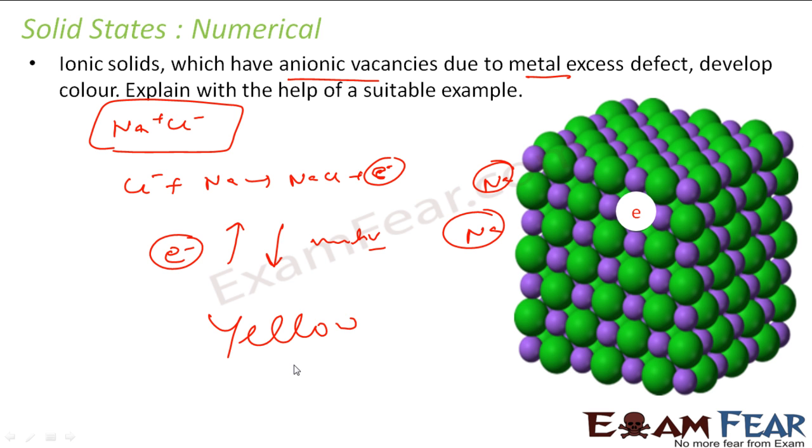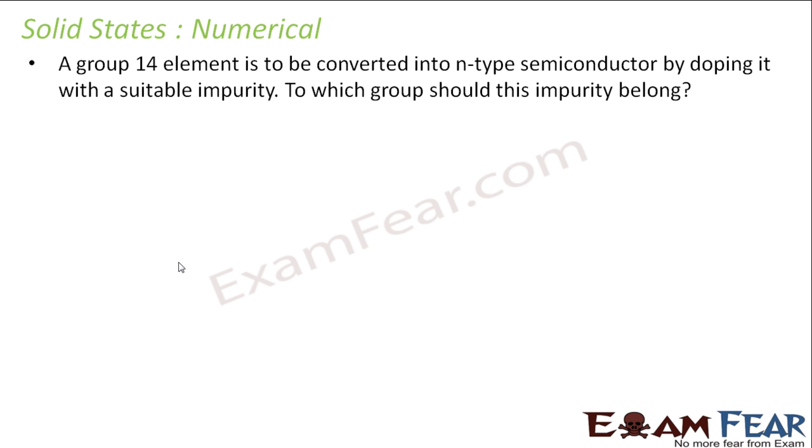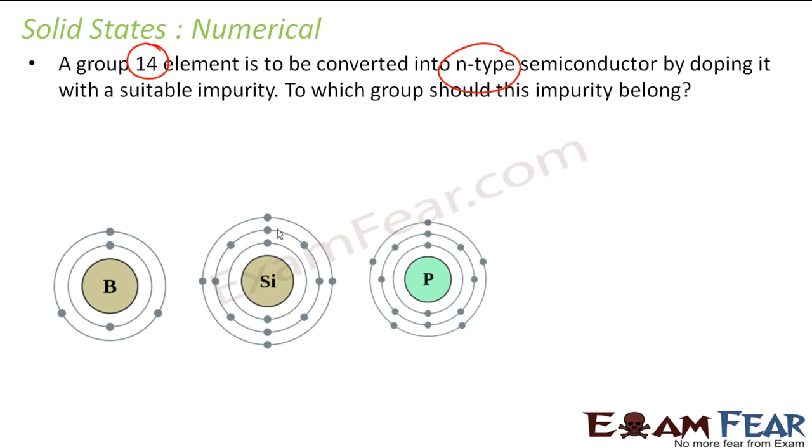The next is: a group 14 element is to be converted to N-type semiconductor by doping it with suitable impurity. To which group should this impurity belong? Let's see, this is my group 14. Now I have to make it N-type. N-type means negative charge, that means something which has more electrons. So I have to dope with something which has more electrons. This silicon has four valence electrons, this phosphorus has five, boron has three. So obviously I dope it with this group to make it N-type.